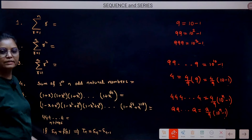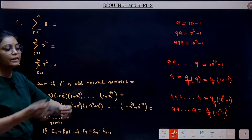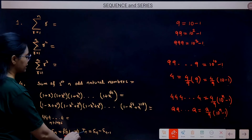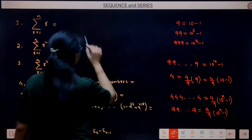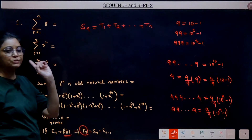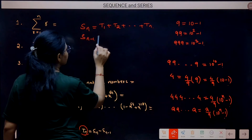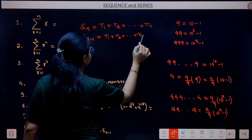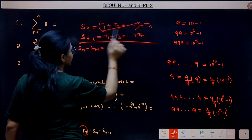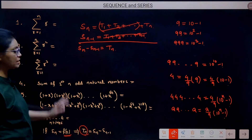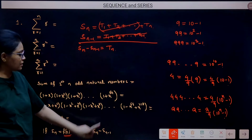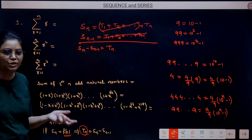If S_n is the sum of first n terms of a sequence given as a function of n, we can find the nth term. S_n = T₁ + T₂ + ... + Tₙ, and S_(n-1) = T₁ + T₂ + ... + T_(n-1). Subtracting: S_n - S_(n-1) = Tₙ. So whenever the sum of n terms is given as a function of n, the nth term is simply Tₙ = S_n - S_(n-1). Then proceed with whatever the question asks.